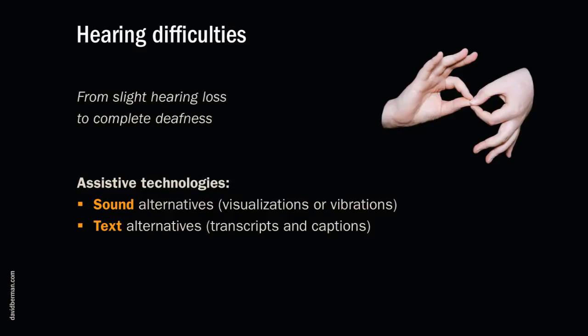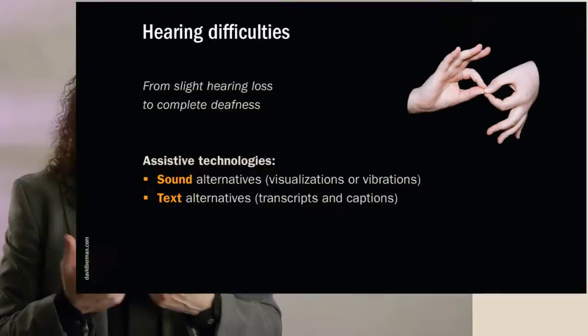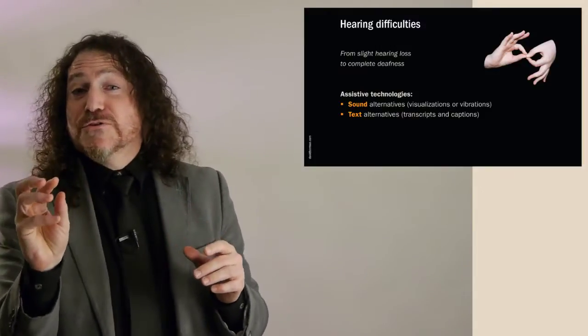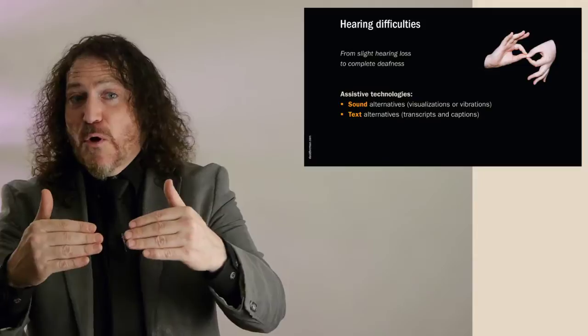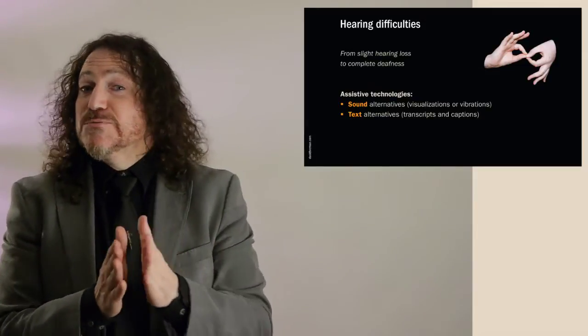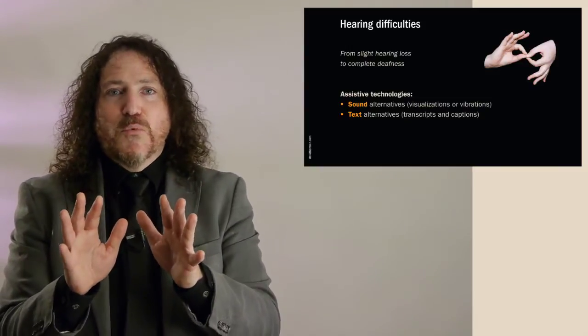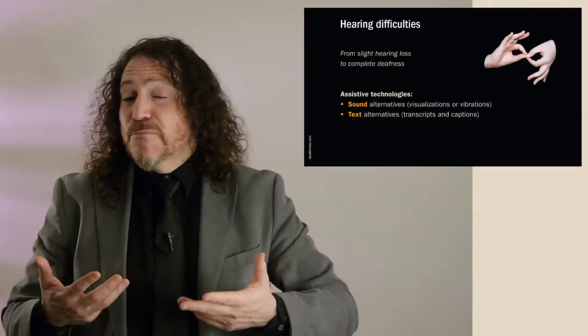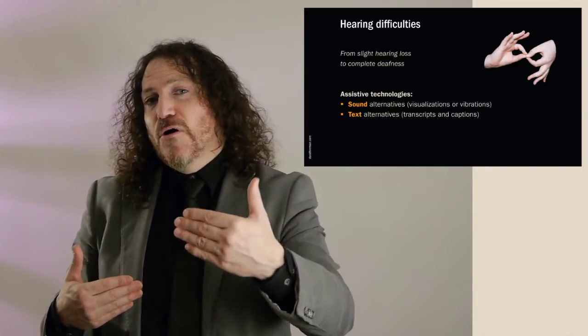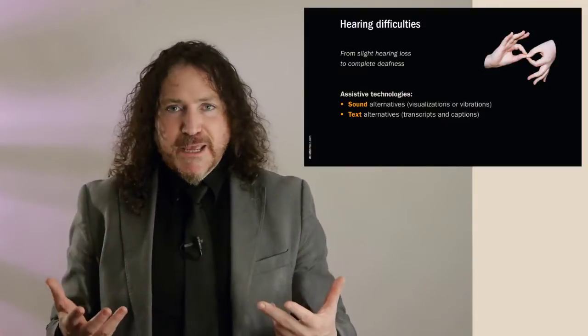The third group covers hearing difficulties. There's a range — some people just got a little too close to the left speaker at a Genesis concert earlier in life and don't hear as well in one ear. Others may not hear at all. Some people can't hear certain frequencies, and in the acquired category, as we get older, certain frequencies simply drop off completely. We have technologies which overcome this. If your website has audio content, we have a variety of techniques to help overcome the challenge that some people, either all the time or some of the time, can't hear.